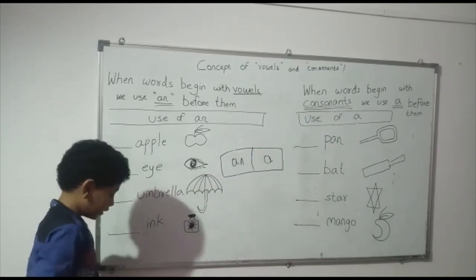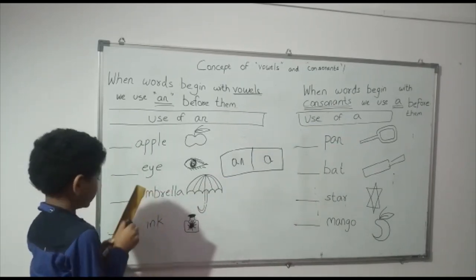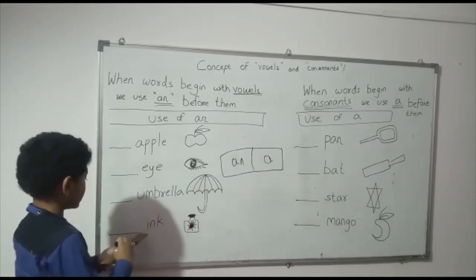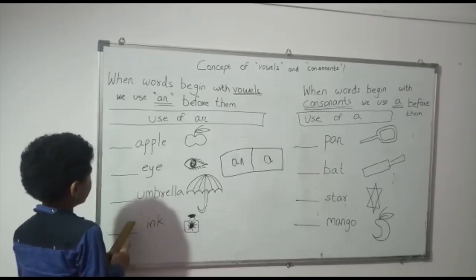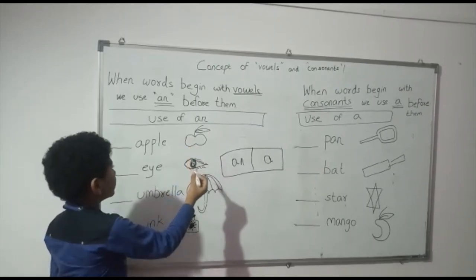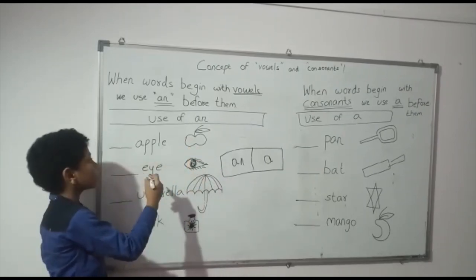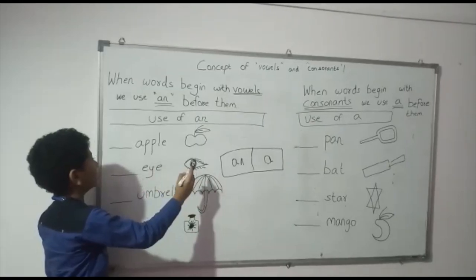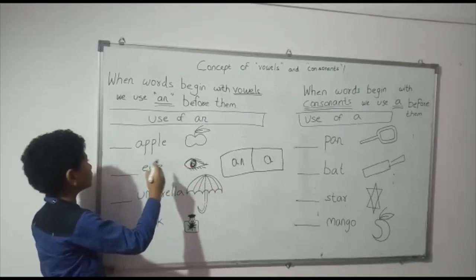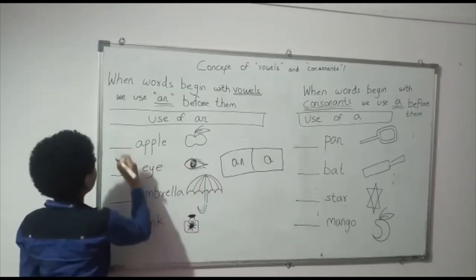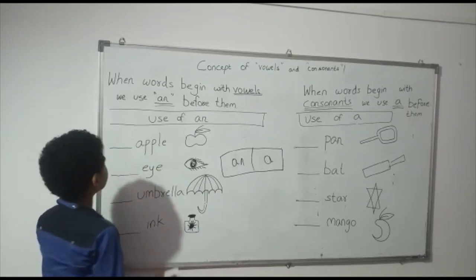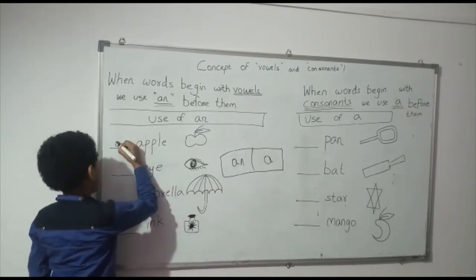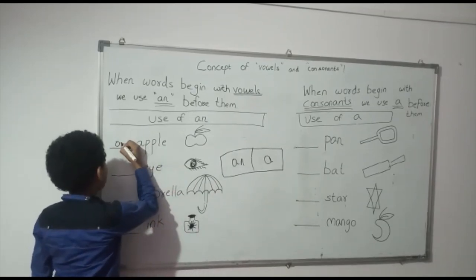So here it is written. Here there is Apple. The word Apple starts with A, and A is a vowel. So we have to write AN — and Apple.